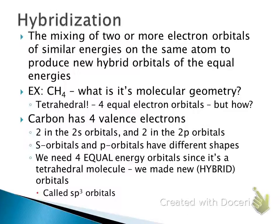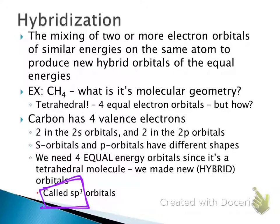These hybrid orbitals have a new name. Rather than s orbitals and p orbitals separately, we call this an sp3 orbital. Carbon has four things bonded around it, and they are now called sp3 orbitals. So instead of having two electrons in an s orbital and two electrons in a p orbital, it has one electron in each of those four sp3 orbitals surrounding it.